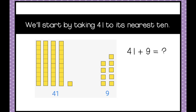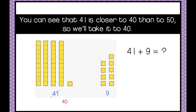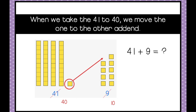We'll start by taking 41 to its nearest 10. You can see that 41 is closer to 40 than to 50, so we're going to take it to 40. When we take the 41 to 40, we've got this extra one left over, and in the compensation strategy we're simply going to add it to the other addend. We used to have 9, now we have 10 because we moved this one here.